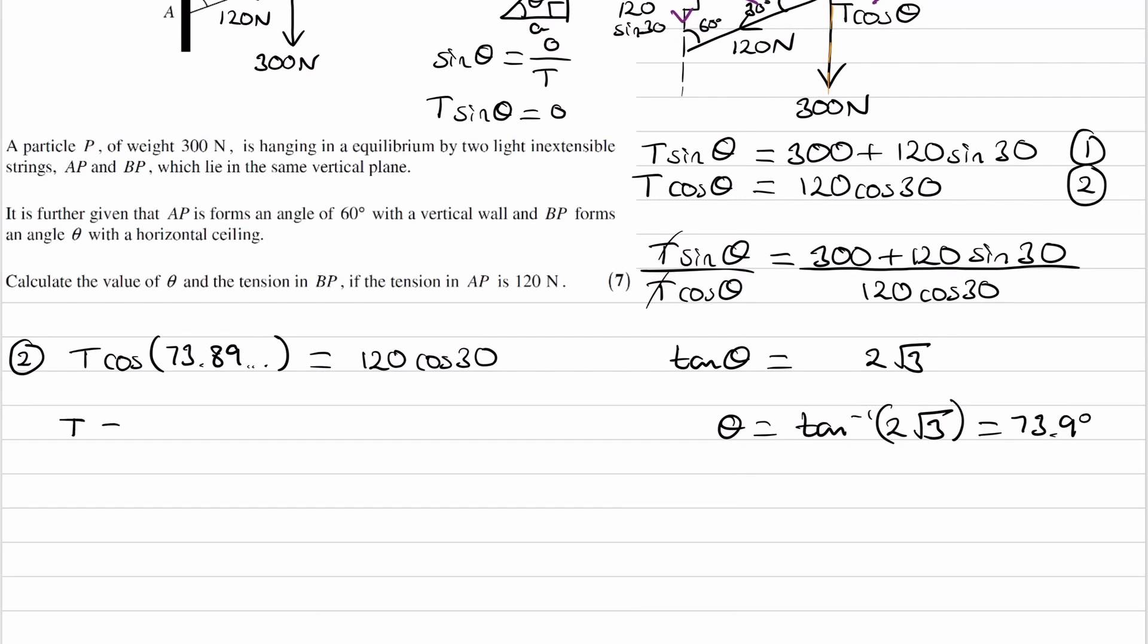Divide the right-hand side, we'll divide both sides, by the cos 73. And then this will give us a value of 375 to 3 sig figs.